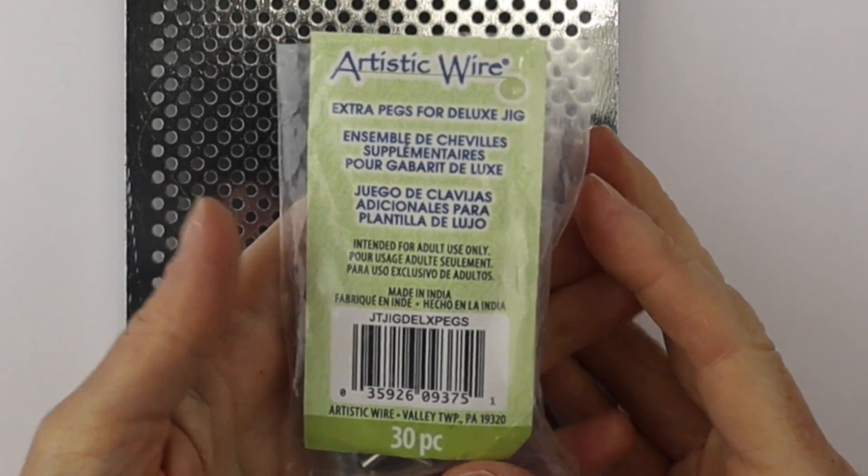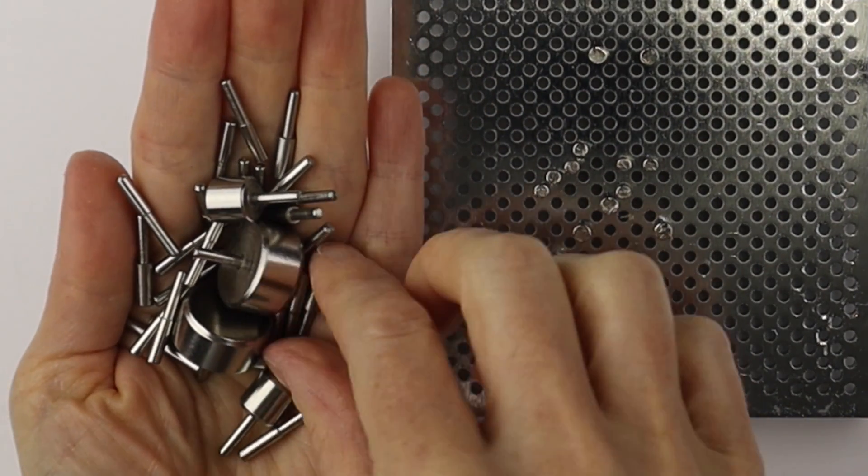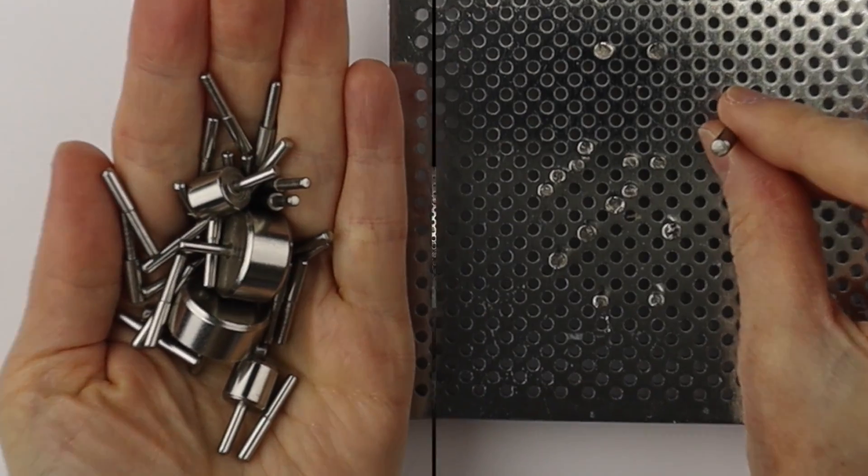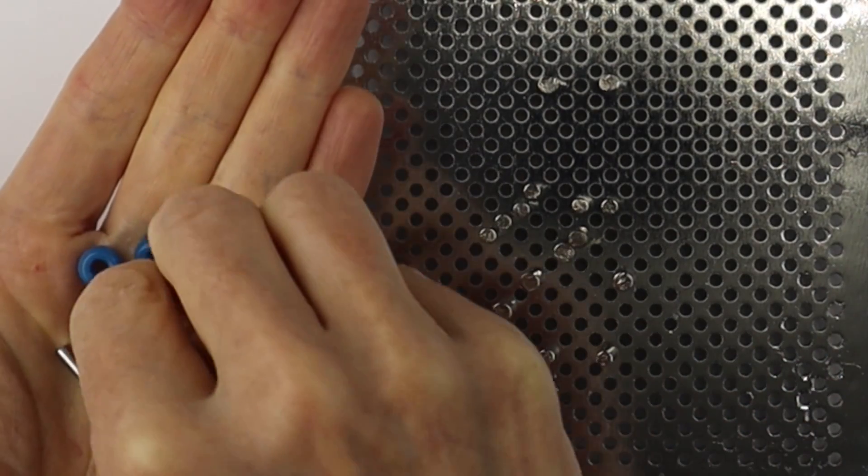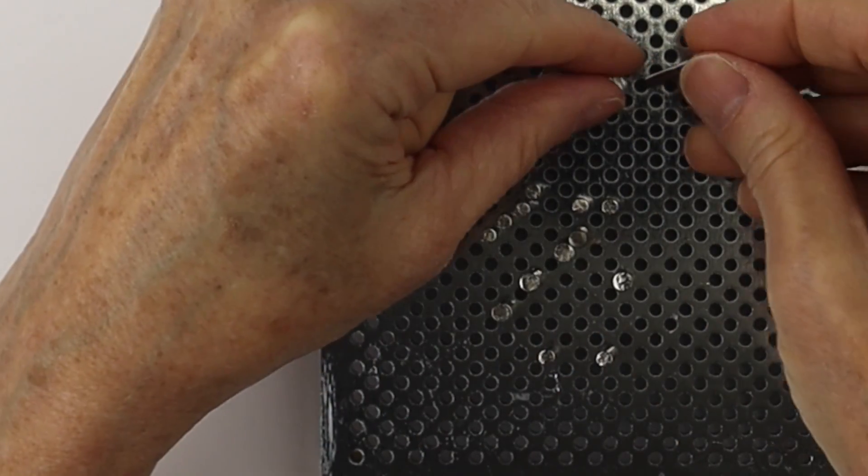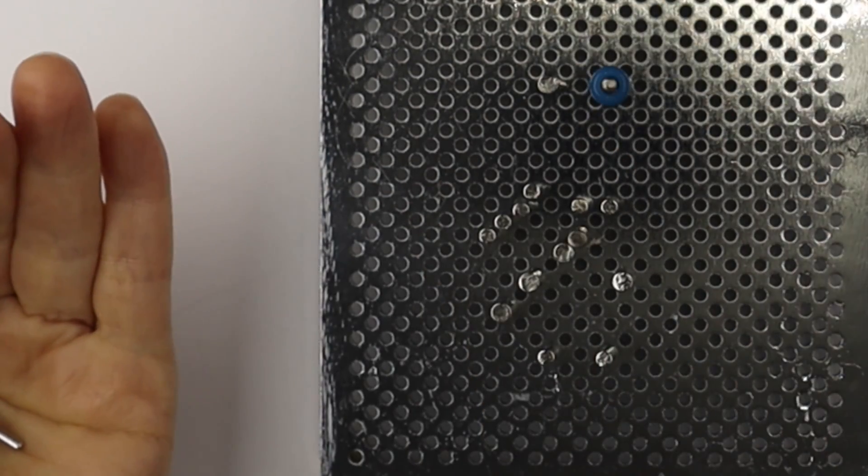And then for the second one I needed some more of the second smallest size pegs. So I got another little pack of pegs from Beadalon and I replaced some of the small pegs with the second smallest peg just to make them a little larger.